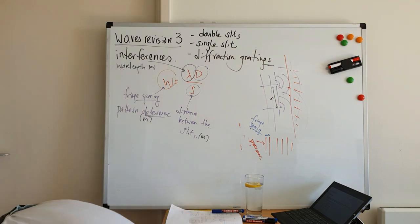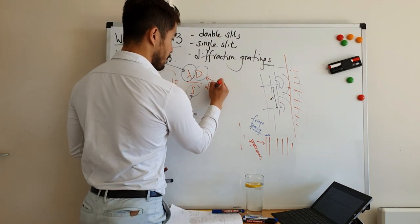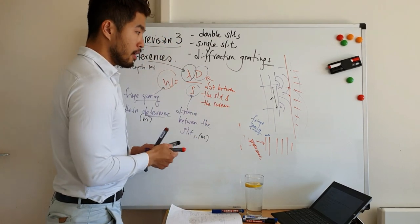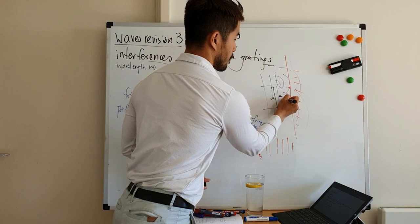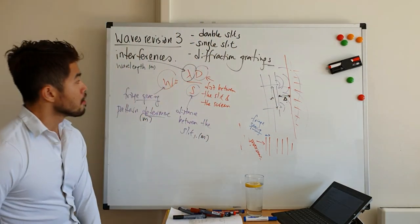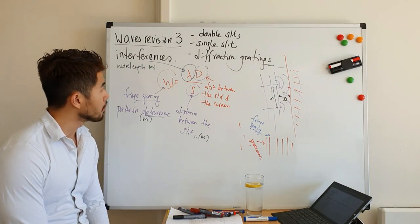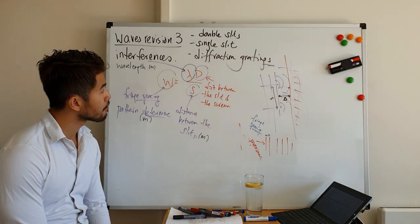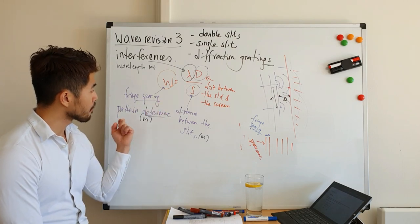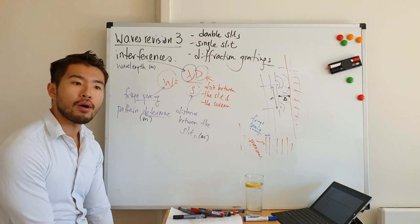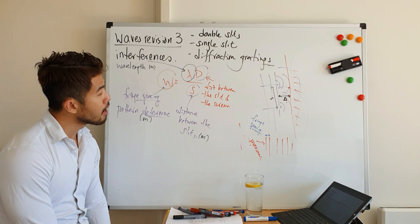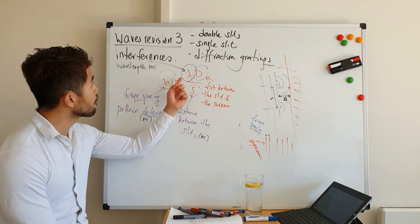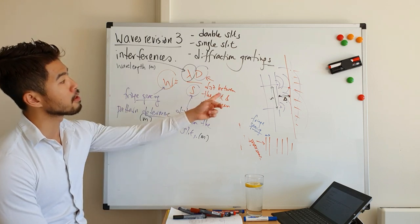Let's recap one more time. Fringe spacing is W — it determines the pattern. When they ask how the pattern looks, we're talking about W. S is distance between the slits — sometimes given in millimetres, so convert to meters. λ is wavelength, self-explanatory. D is distance between the slit and the screen.